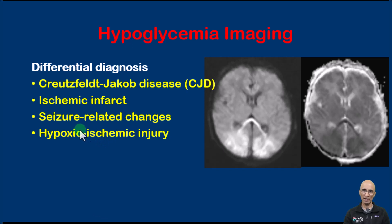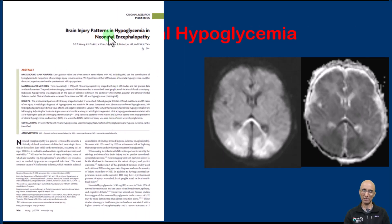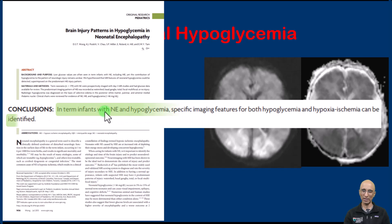It is important to remember that both conditions can coexist. In fact, the presence of neonatal hypoglycemia can worsen the clinical outcome of hypoxic ischemic injury, so it is important to identify the imaging features of both. Indeed, a research article explored whether features of both hypoxic ischemic injury and neonatal hypoglycemia can be identified, and found that specific imaging features of both hypoglycemia and HIE can be identified on MRI brain imaging.